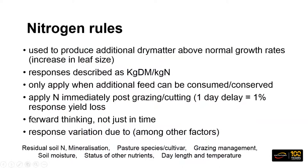With nitrogen, there are some key rules. The first is that we use it to produce additional dry matter over our normal growth rate, as shown in Derek Moot's Canterbury Plains work. We describe that response as kilograms of dry matter for every kilogram of nitrogen applied. We only apply that additional nitrogen when we can consume or conserve that feed, otherwise it becomes expensive. We want to get nitrogen on immediately post-grazing or right after cutting silage — every day we delay application, the yield response is decreased by 1%.